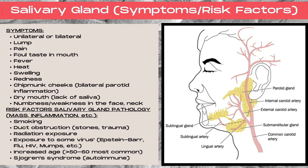Let's talk about common symptoms and risk factors for salivary gland pathology. When things go awry in the salivary glands, some common symptoms can be a lump or pain, a foul taste in the mouth, fever, heat, swelling, redness. You can get chipmunk cheeks, which is bilateral parotid inflammation, dry mouth due to a lack of saliva, and also numbness or weakness in the face or neck in the region of the glands. These symptoms can occur unilaterally or bilaterally, depending upon which glands are affected.